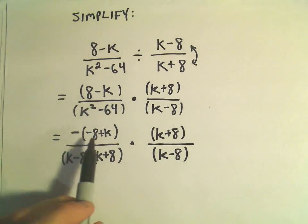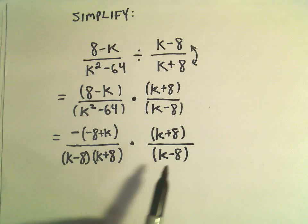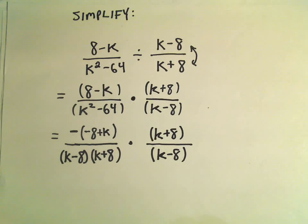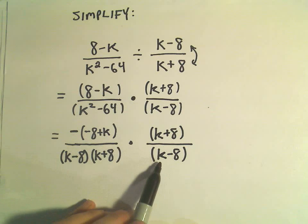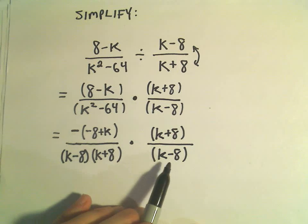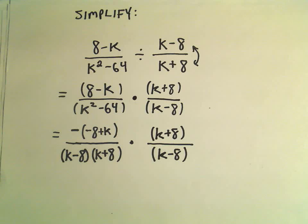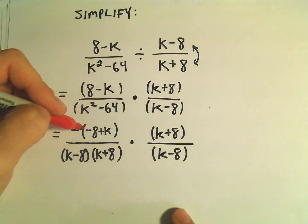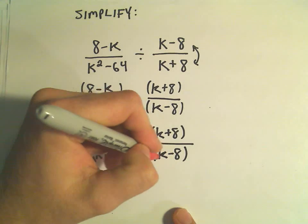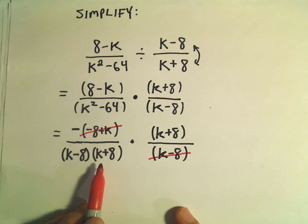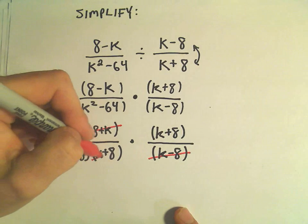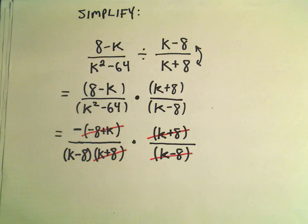Now, since we have all multiplication in the numerator and all multiplication in the denominator, we can cancel away. Notice in the first set of parentheses we can rewrite that as k minus 8, and we have a positive k minus 8 down here, so those cancel. Then we have a k plus 8 in the numerator and a k plus 8 in the denominator, so those cancel out as well.